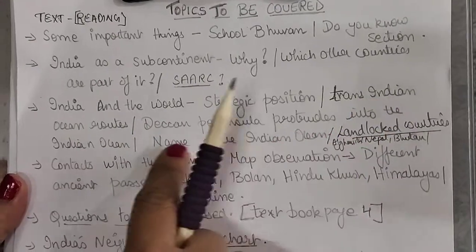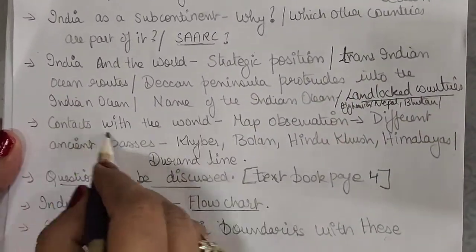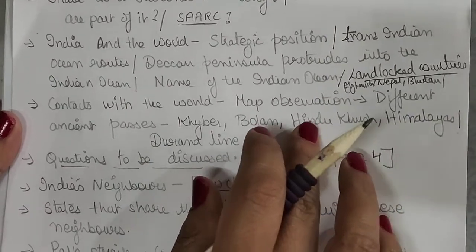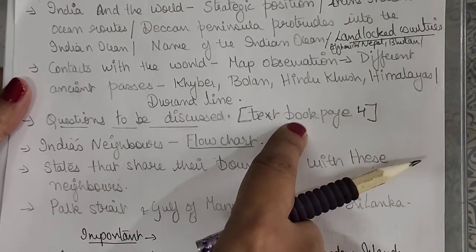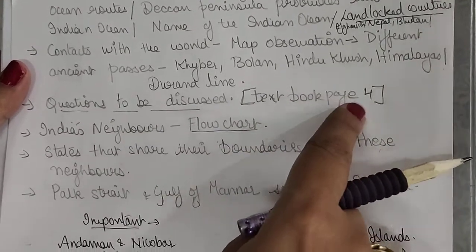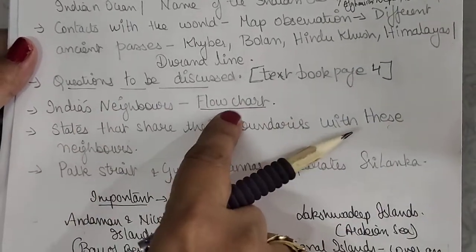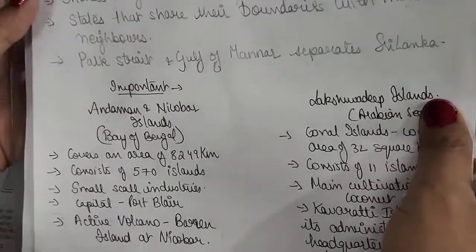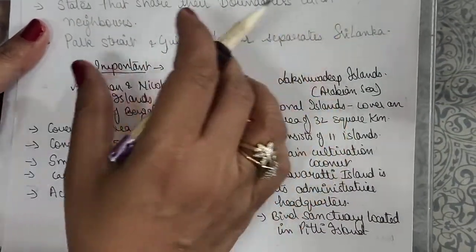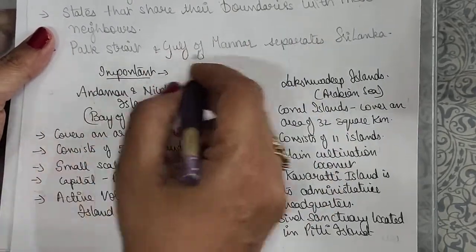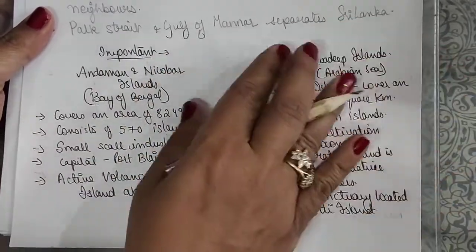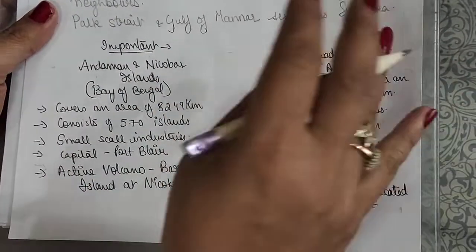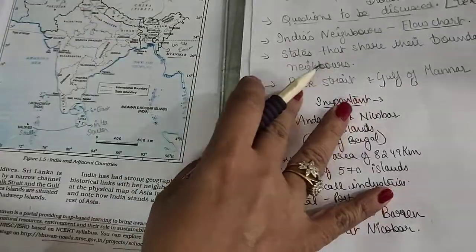Under India and the World, I'll cover contacts with the world, and discuss some important ancient passes — they are not in the textbook but can come in the exam. We'll discuss questions from the last paragraph on page number four, then show a flowchart of India's neighbors and the boundaries shared with them. We'll also discuss how Gulf, Bay, and Strait differ from each other, and cover some important points regarding Andaman and Lakshadweep islands.